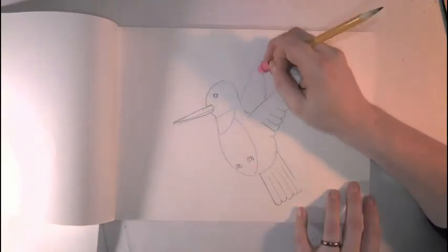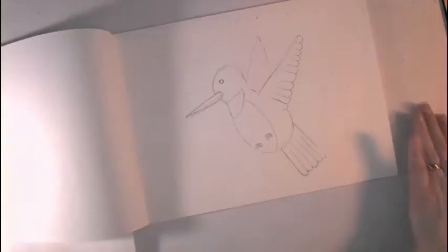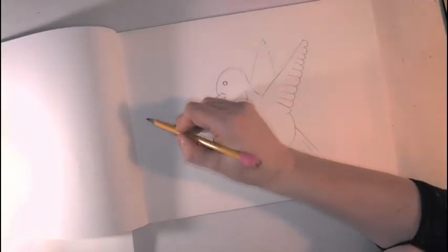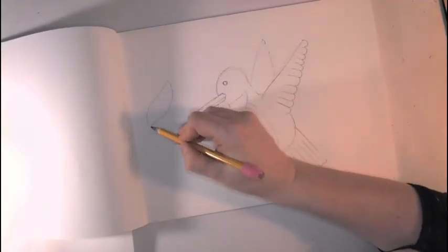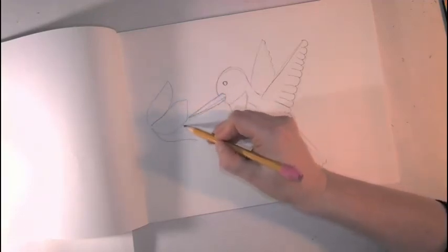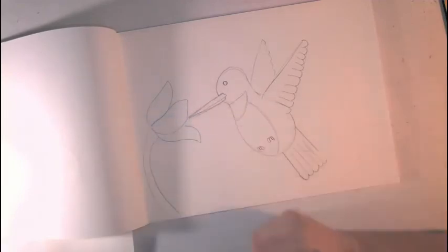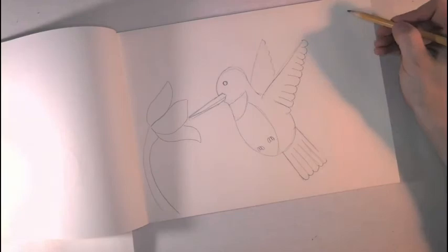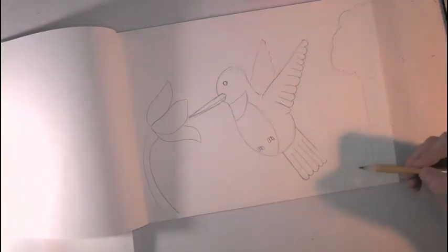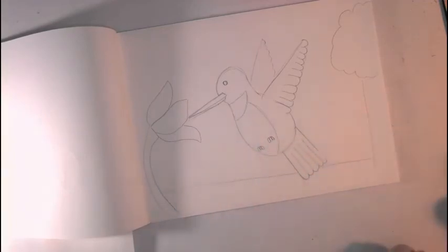So, once you've done drawing your hummingbird, go ahead and add anything else that you'd like to around him. Like, in my picture, I drew that he's got, he's going to be eating from a flower. Like that. So, you can add a flower. You can draw trees in the background if you'd like. I could put, there's the ground. Alright.